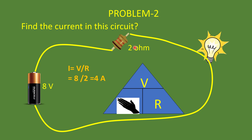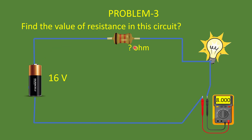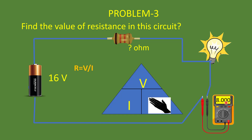Let's look at one more problem: find the value of resistance in the circuit. It is a 16-volt battery connected to an unknown resistor with a lamp, and the multimeter reading is 8 amps. Hiding the R part of Ohm's triangle: R equals V divided by I. Voltage is 16 volts, current is 8 amps, so 16 divided by 8 gives 2 ohms as the resistance.